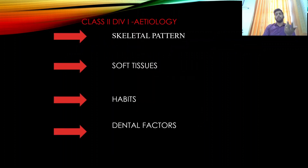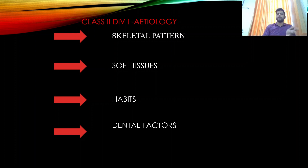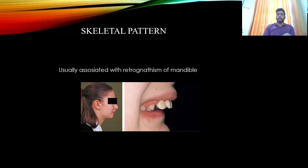The etiology of Class 2 Division 1 is divided into four factors: skeletal, soft tissue, habit, and dental. The skeletal factor is usually associated with retrognathism of the mandible, as seen in the picture showing a patient with a retrognathic mandible.